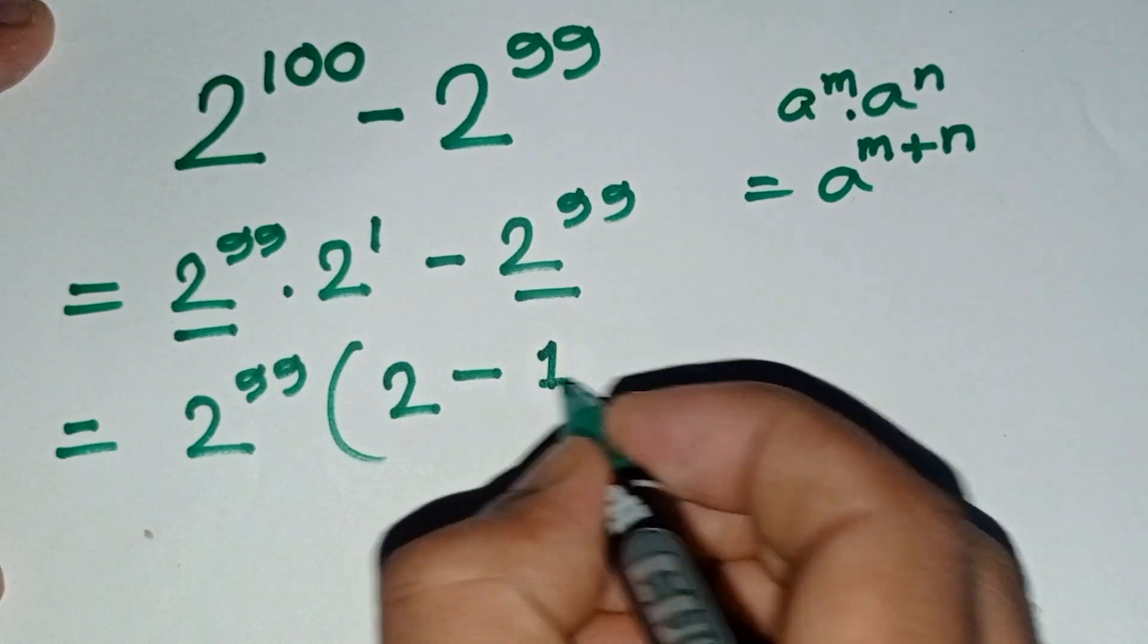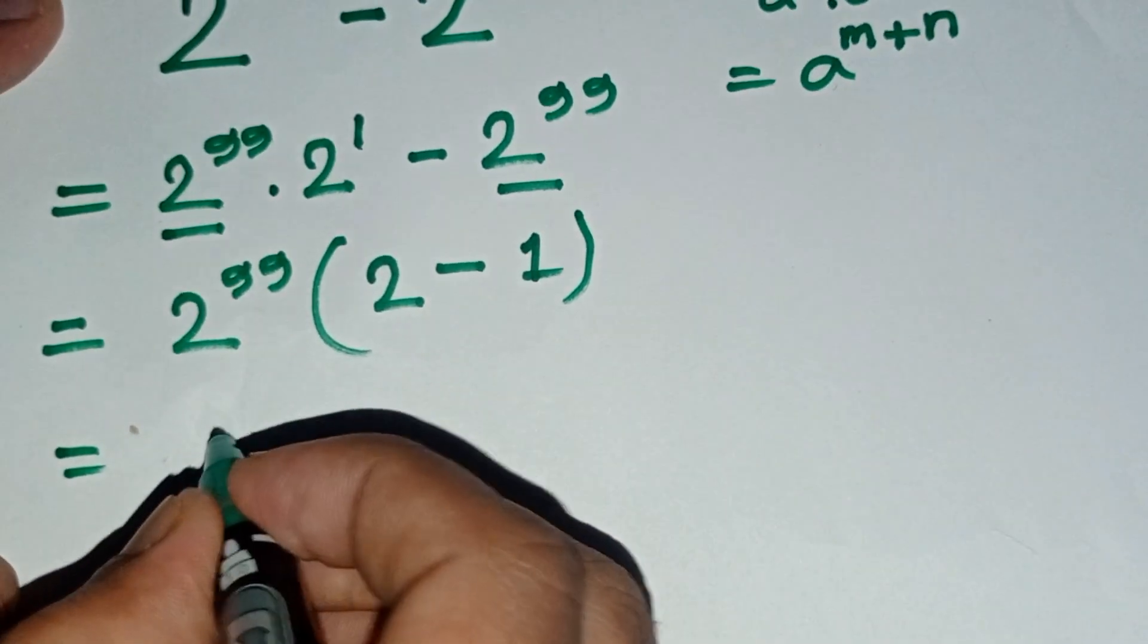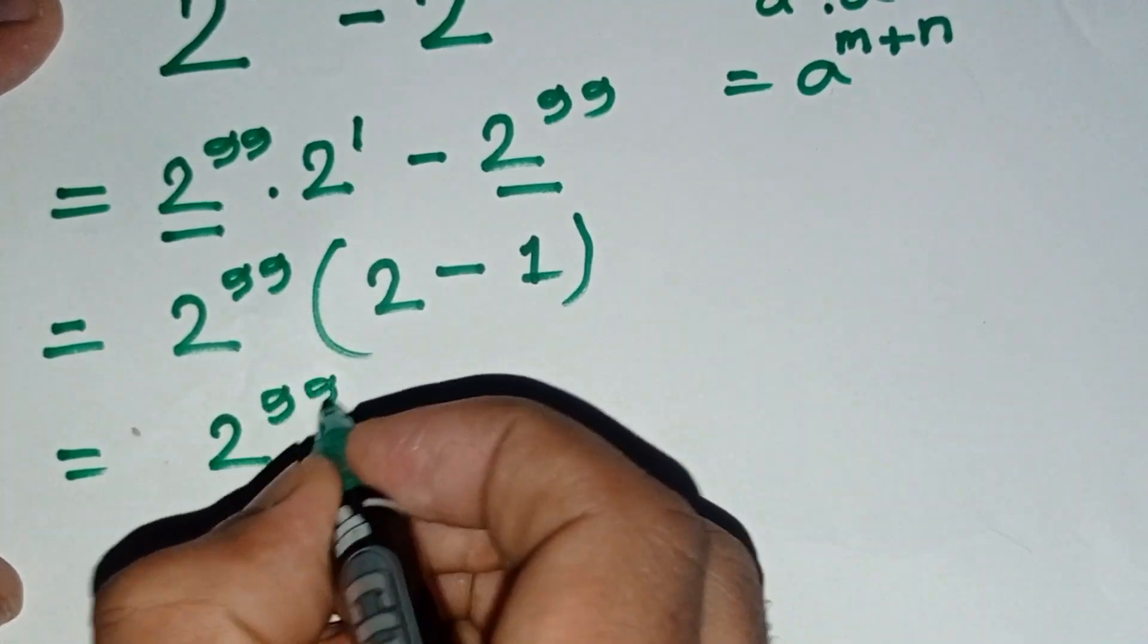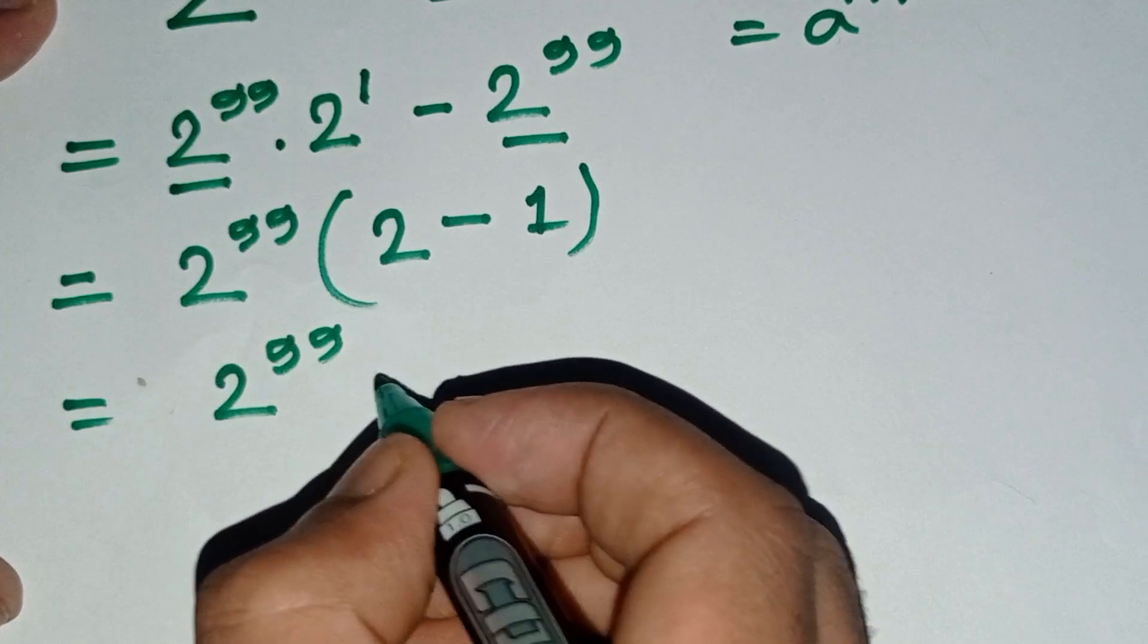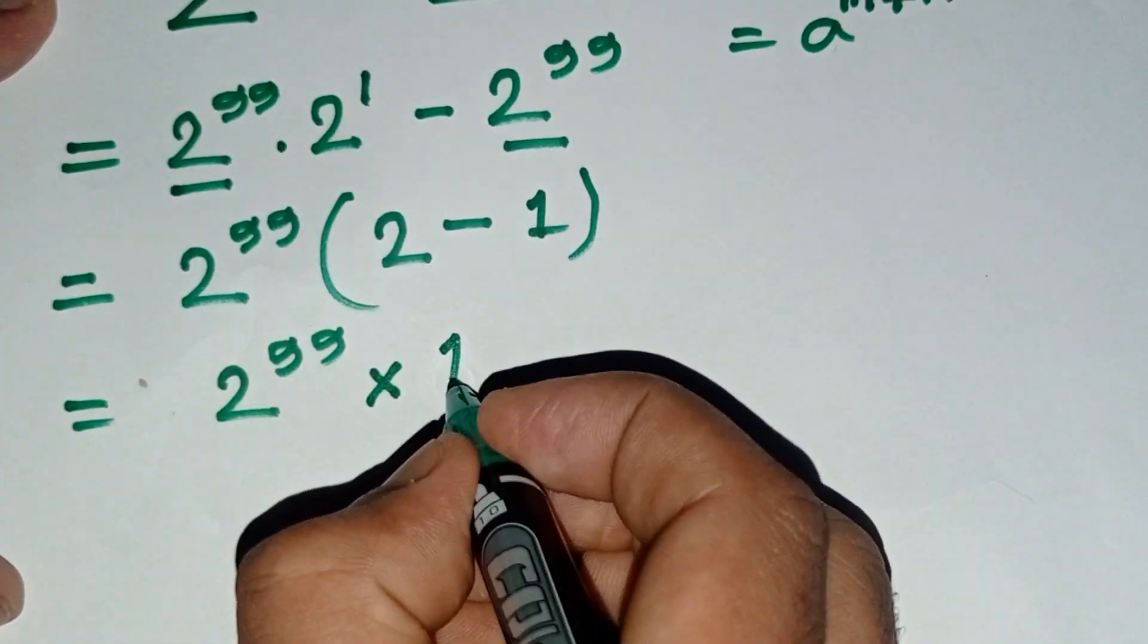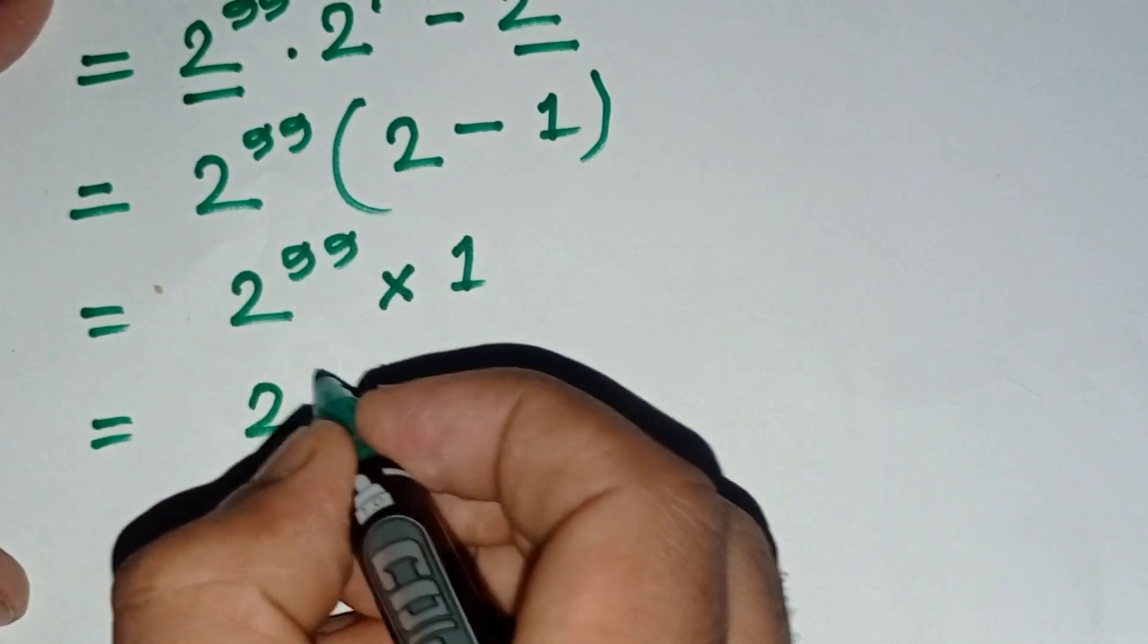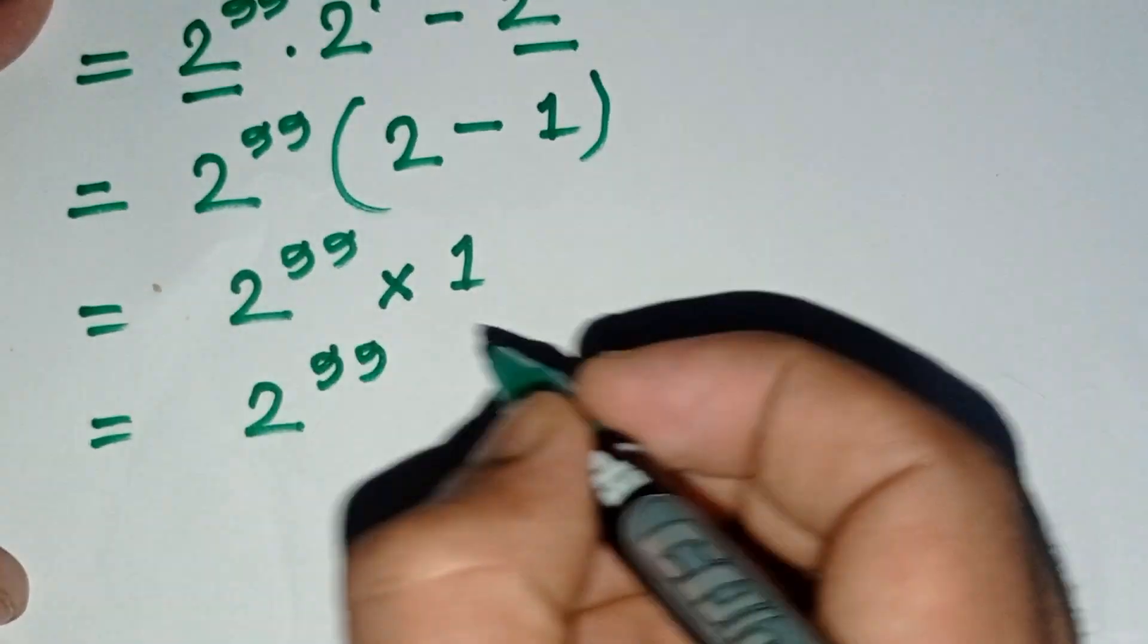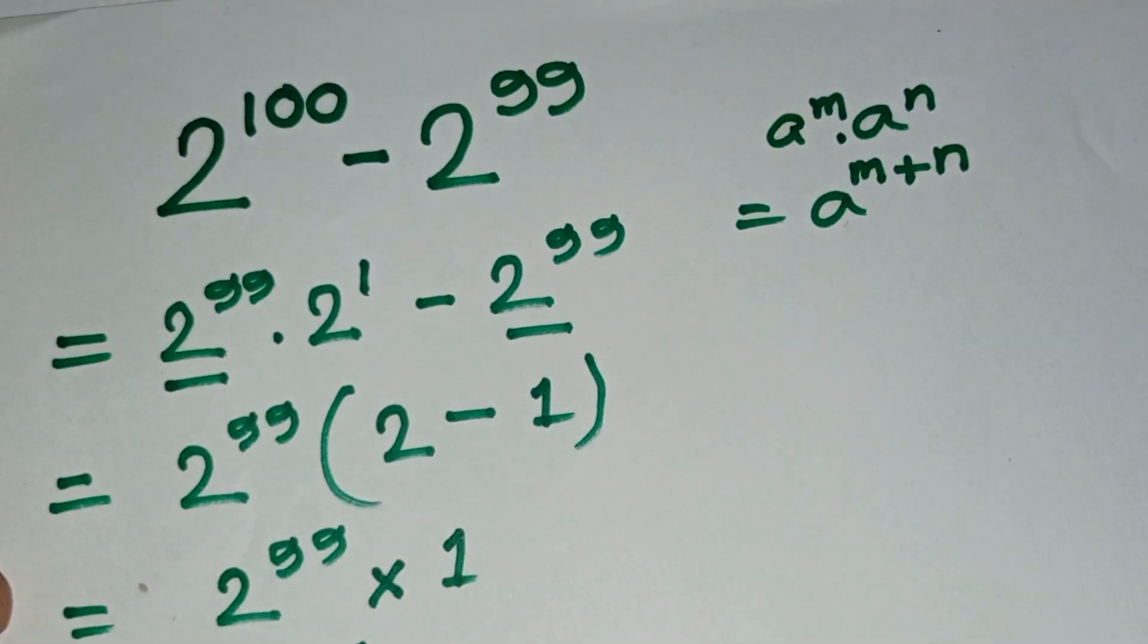Now 2 to the power 99 times 2 minus 1 equals 1, so our final result is 2 to the power 99. So thanks for watching, don't forget to subscribe to my channel.